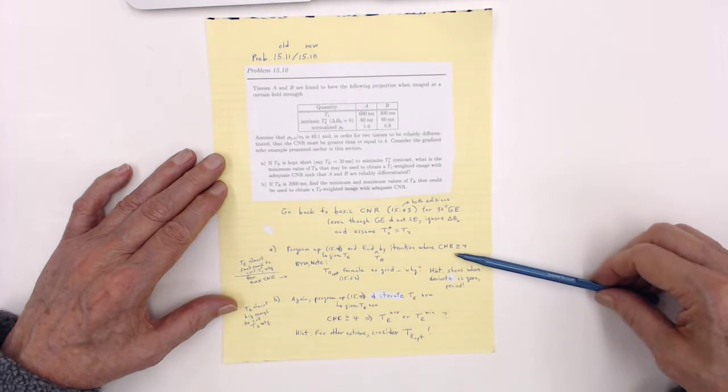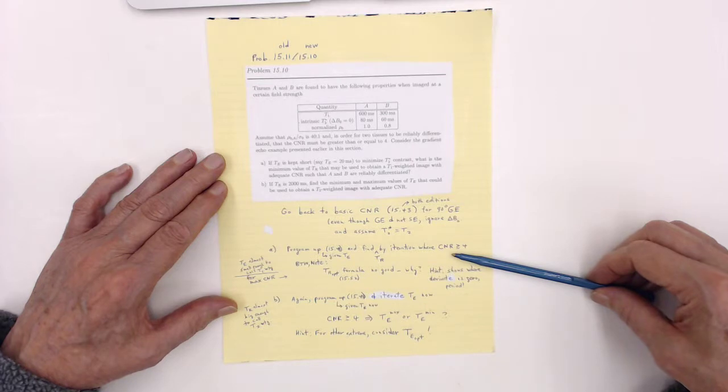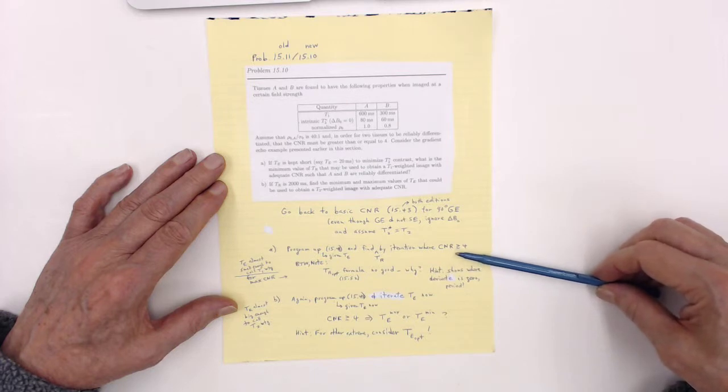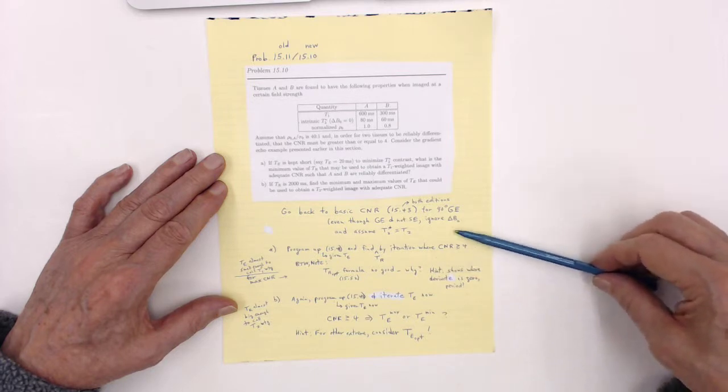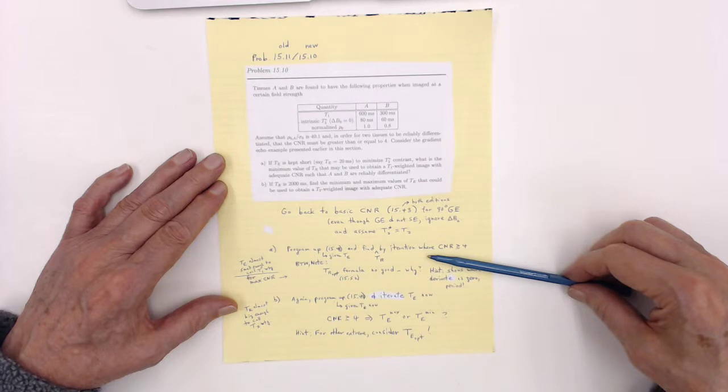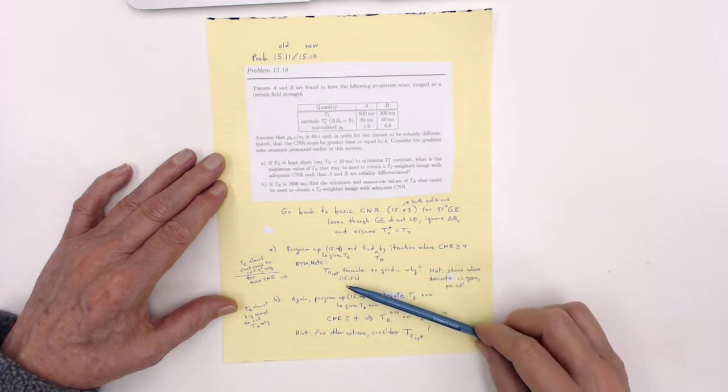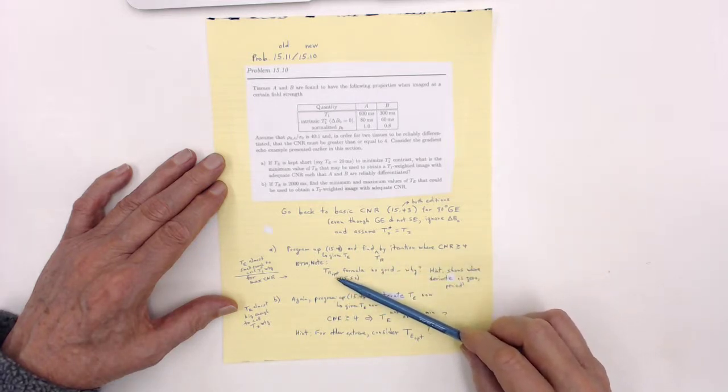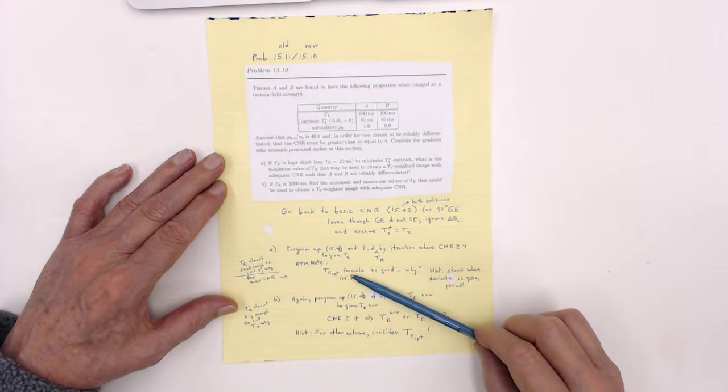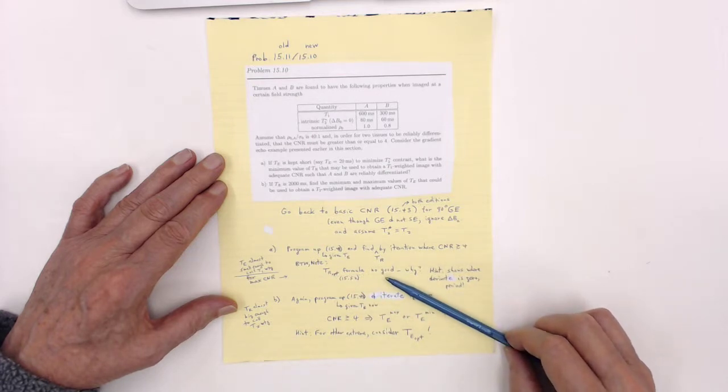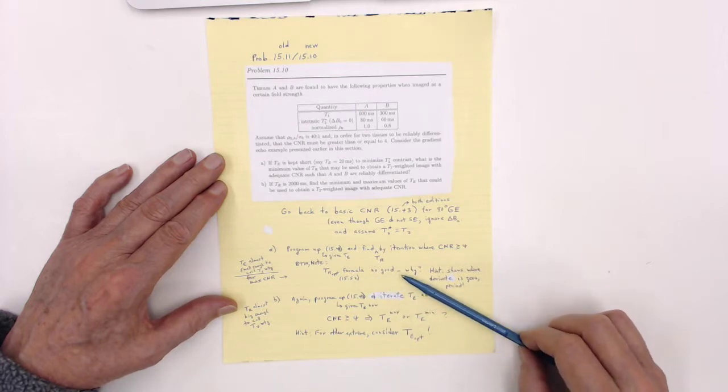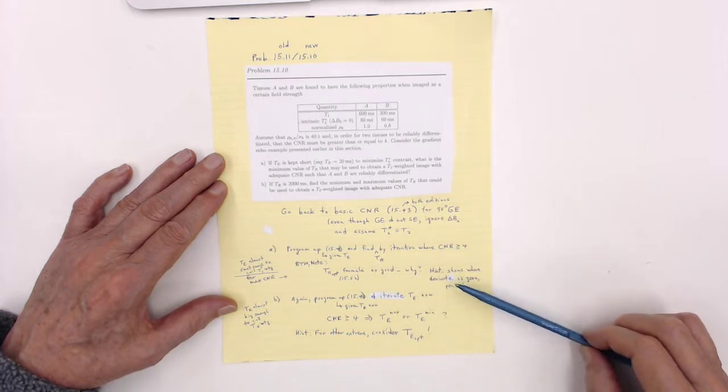And then you'll see indeed that this is the minimum value of TR that can be used and it's just a little numerical thing. By the way, if you were to look at the optimal value of TR that would give you the biggest CNR, you actually would find something interesting. It's actually, it's no good here. Why? Well, just as a hint.